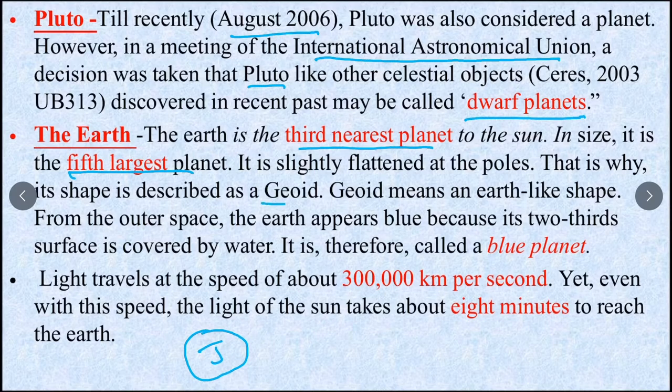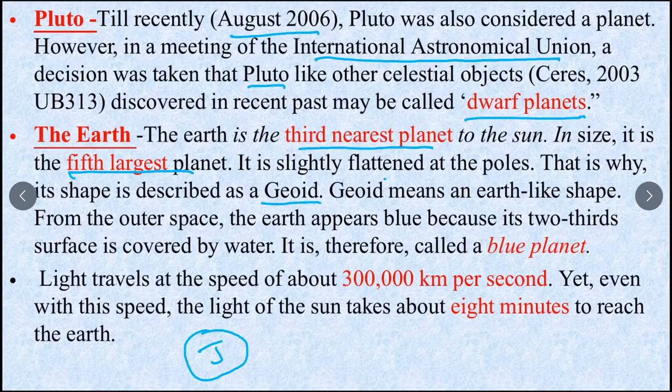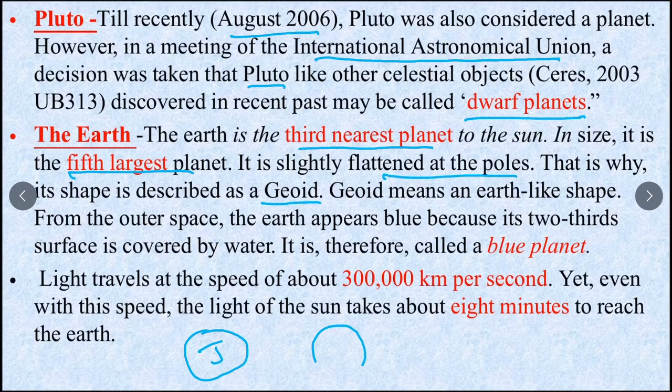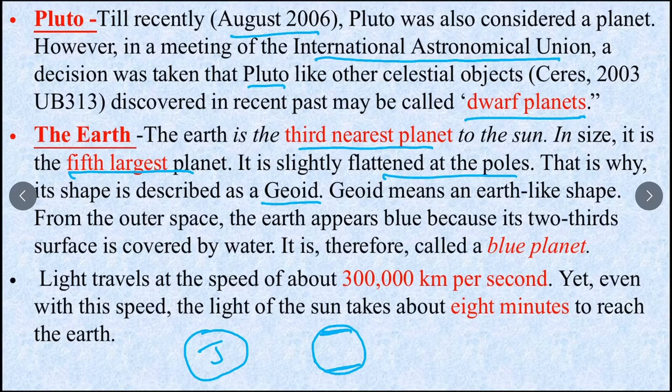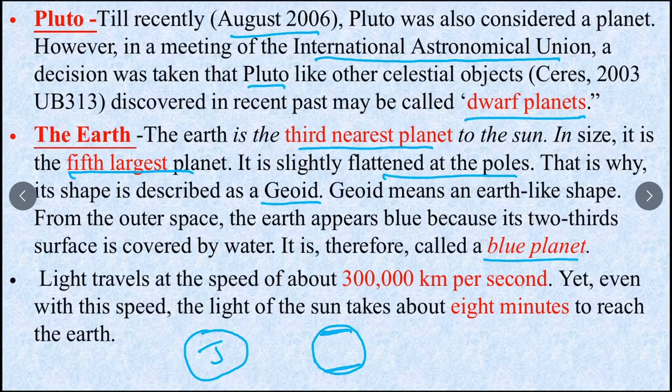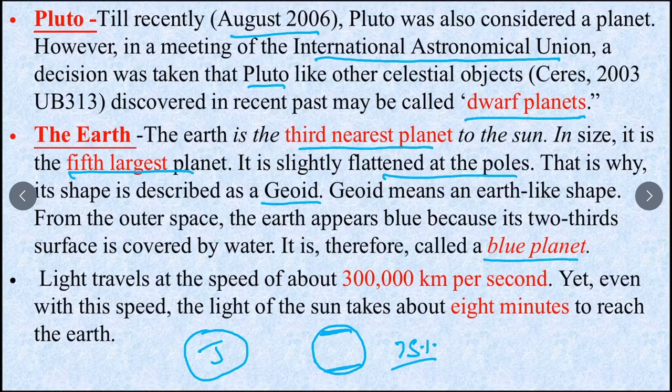Earth's shape is geoid. It means it is flattened at the poles. So Earth is not like a full circle, it is somehow flattened from the poles. Earth is also called blue planet. Why? Because we know that our Earth is 75% water and water is blue. This is why Earth is called blue planet.